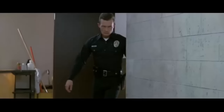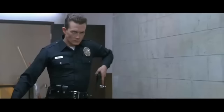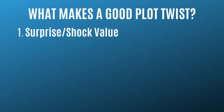Now let's answer the question: what makes a good plot twist? There are five things. The first is surprise and shock value. When you're writing a twist, it's the writer's job to mislead the audience. You need to make the audience believe one possibility will happen, then you deliver the opposite, or something completely mind-blowing and off the wall.